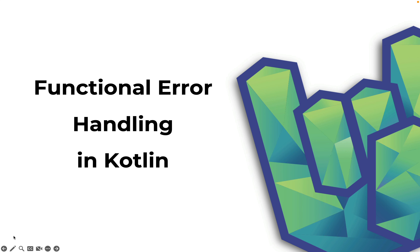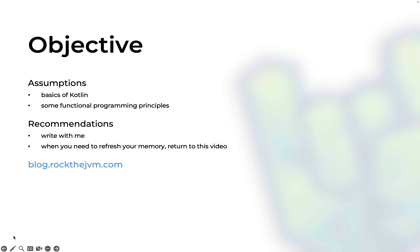Hey everyone, this is Daniel for Rock the JVM and this is a tutorial for functional programming in Kotlin. Specifically we're going to talk about functional error handling, nullable types and option types, without necessarily dealing with the cause of errors, which is going to be a subject for a future video. This tutorial assumes some basics of the Kotlin language and some functional programming principles, which I'm also going to glance over while we do the code examples. Whenever you need to refresh your memory, refer back to this video or go to the written form at the blog, courtesy of my old student and friend Ricardo Kardon.